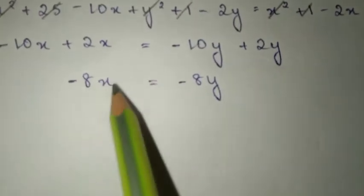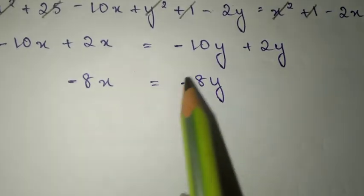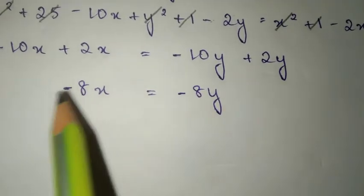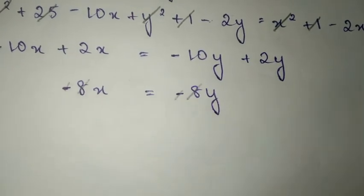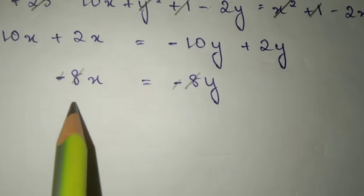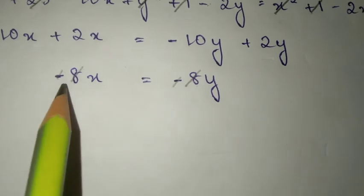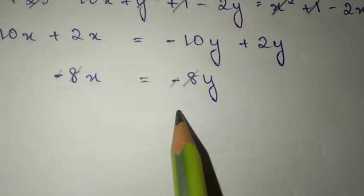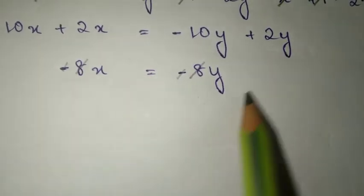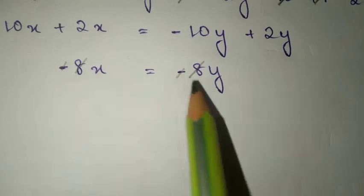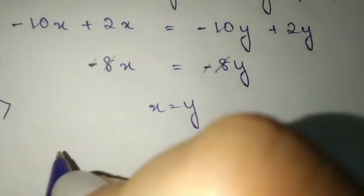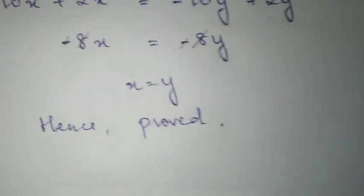Now, we bring like terms together. We have -8x on the left side and -8y on the right side. Both negative signs cancel, and dividing both sides by -8, the 8s cancel each other out, giving us 1. Similarly on the right side, dividing by -8 gives 1. So we get x is equal to y, which is what was required. Hence proved.